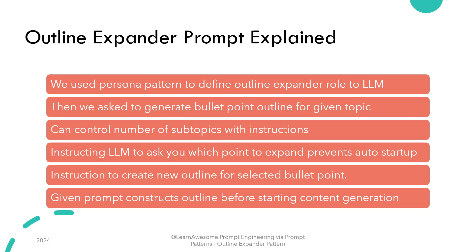You instruct it to create a new outline for the bullet point you select. You can specify the bullet point by number, and it is smart enough to generate sub-bullets in formats like 1.3 or 3.5, making it easier to refer to any point in the outline. You can also introduce instructions to use a particular numbering system — like Roman numerals or alphabets. Finally, you tell it to generate an outline for your selected bullet, and at the end ask which bullet to generate content for. In this prompt setup, you define the entire outline before generating any content.